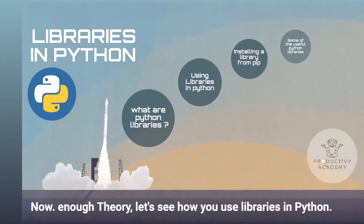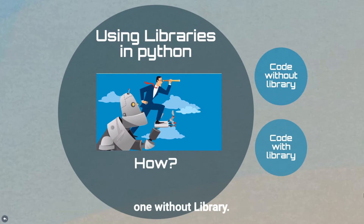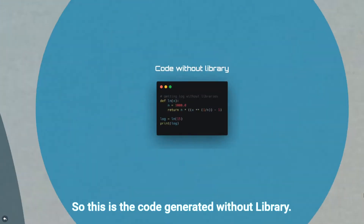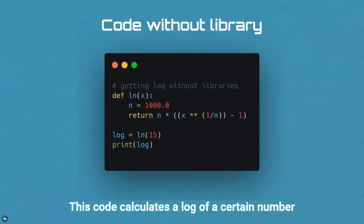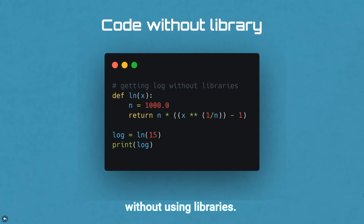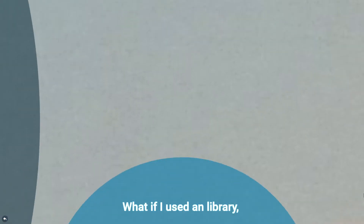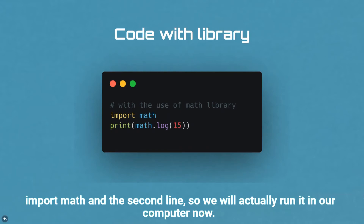Now enough theory. Let's see how you use libraries in Python. We'll be looking at two code examples: one without a library and one with a library. The code without a library calculates the log of a certain number, and it takes five lines to do it. What if I used a library? With a library, it merely takes two lines — 'import math' and one more line.